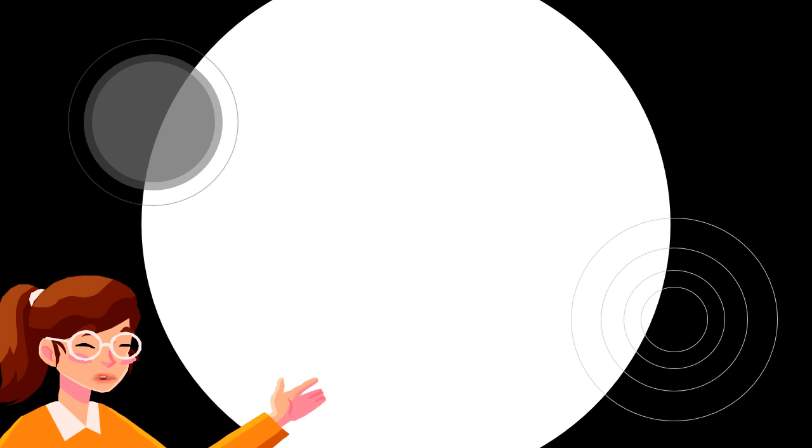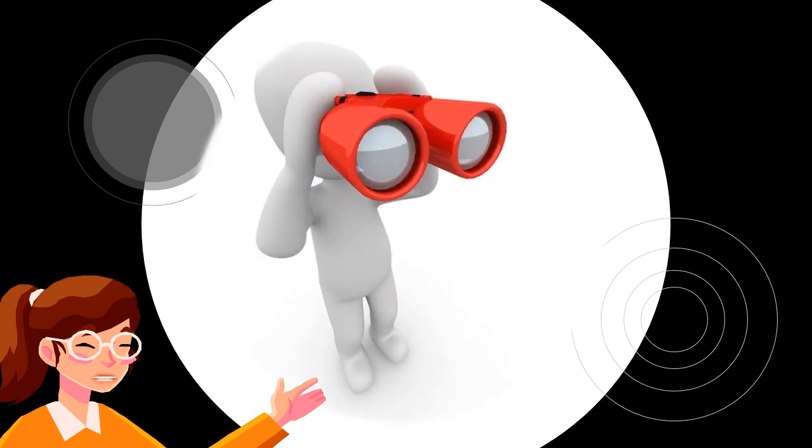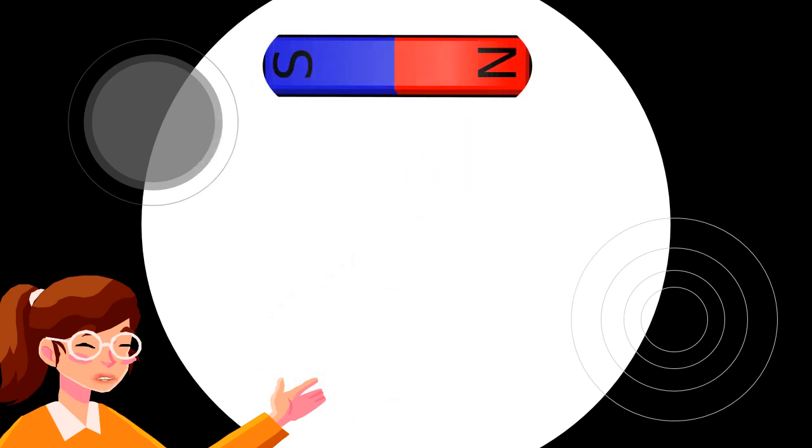People were able to distinguish between the north and south poles of any magnet thanks to the finding that one particular magnet's pole faces northward, while the other faces south.